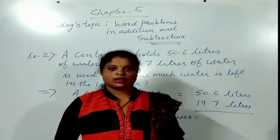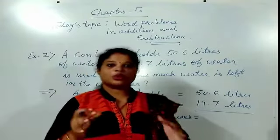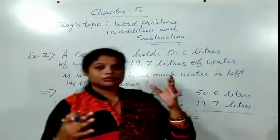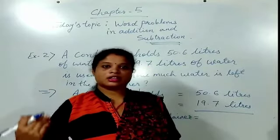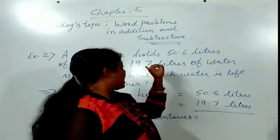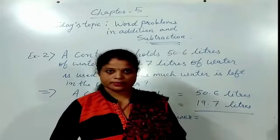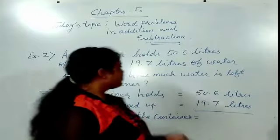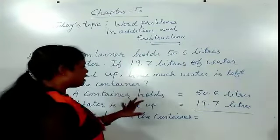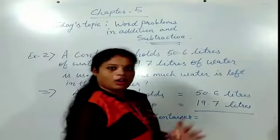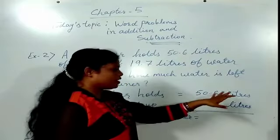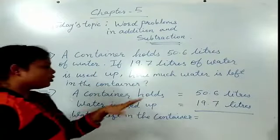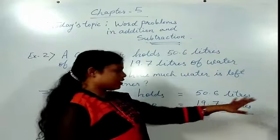A container holds 50.6 liters of water. If 19.7 liters of water is used up, how much water is left in the container? So, in one container, 50.6 liters of water is already stored. From that 50.6 liters, we have used 19.7 liters. Then how much water is left in the container? That is our question.